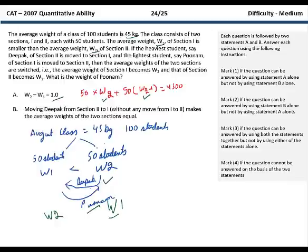The second statement gives that something more. When we move Deepak from section 2 to 1, it makes the average weight of the two sections equal. So using this statement you can calculate the weight of Deepak. And then using the first one you will know how much Poonam weighed. So we will need both of these two to solve this question. So we will mark 3 as the answer.